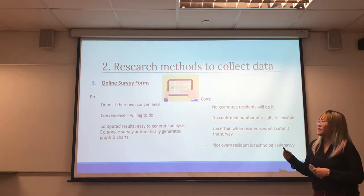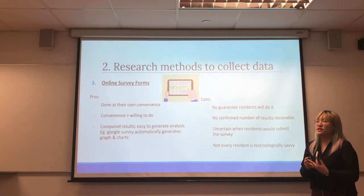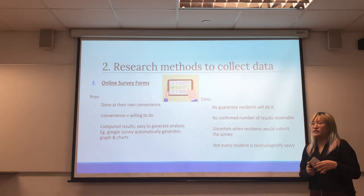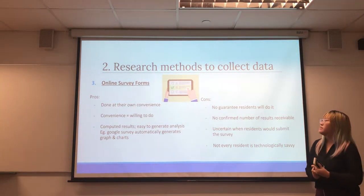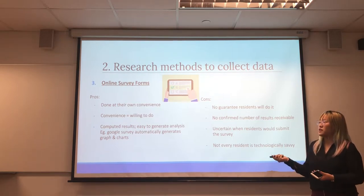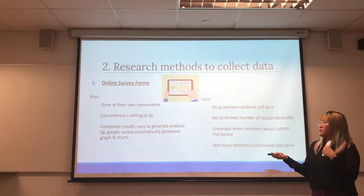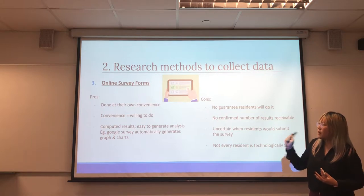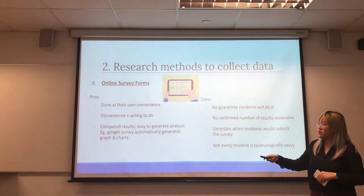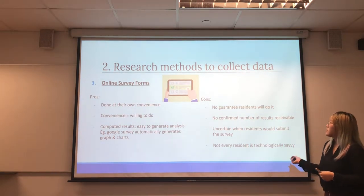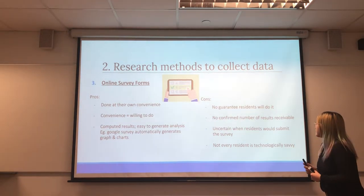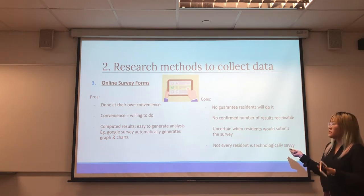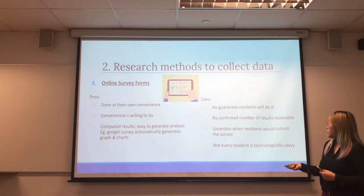The third method is online survey forms. The advantage is that respondents can do the survey at their own convenience, which is important because most people find surveys unpleasant when stopped at a busy moment. With more convenience, there is more willingness to complete it. Another advantage is that results generated online can automatically be converted into charts or graphs using platforms like Google Forms. The disadvantage is that there is no guarantee respondents will actually complete the survey, no confirmed number of results, uncertainty about when they will submit, and not every resident will be technologically savvy.